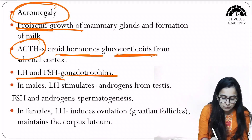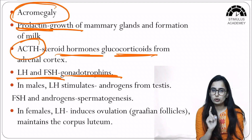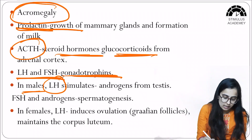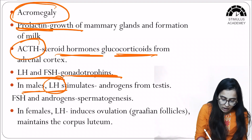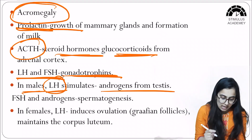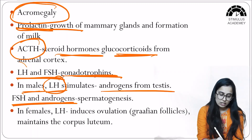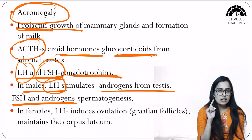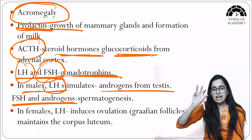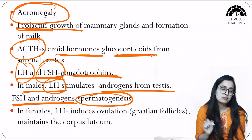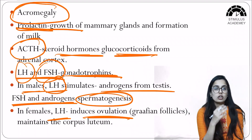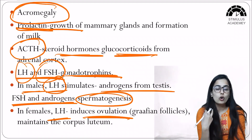LH (luteinizing hormone) and FSH (follicle stimulating hormone) are gonadotropins released from the anterior pituitary (pars distalis). In males, LH stimulates the release of androgens from the testes. FSH and androgens together in males lead to spermatogenesis — the formation of sperm.